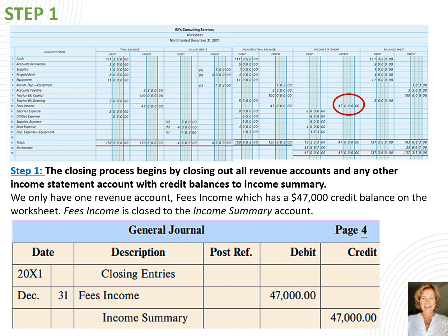Let's write that journal entry into the general journal. The first step is to write 'closing entries' on the first line, followed by writing the date into the date columns. Next we'll write fees income into the description and the amount of $47,000 into the debit column. On the next line we slightly indent and write income summary into the description column and the amount of $47,000 into the credit column. We're now ready for step 2 of the closing process.